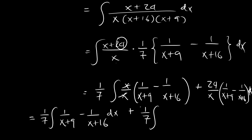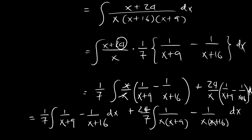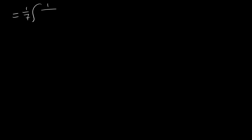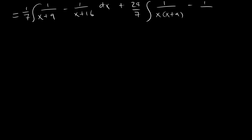So we have 1 over 7 times the integral of (1 over x plus 9 minus 1 over x plus 16), plus 24 over 7 times the integral of (1 over x plus 9 minus 1 over x plus 16). This becomes 1 over 7 times the integral of 1 over x plus 9 minus 1 over x plus 16, close bracket, plus 24 over 7 times the integral of 1 over x plus 9 minus 1 over x plus 16. This is very simple.